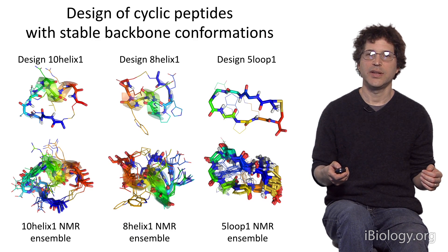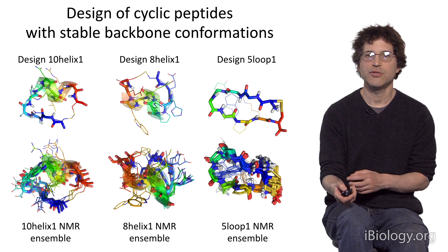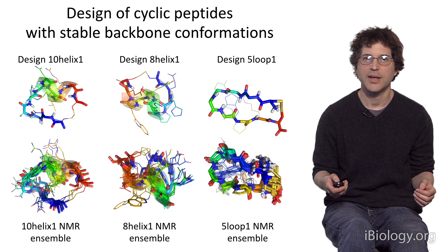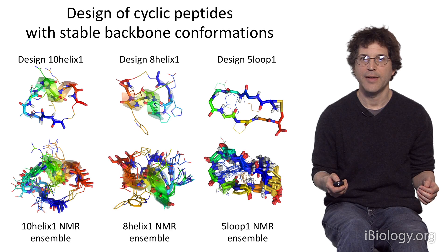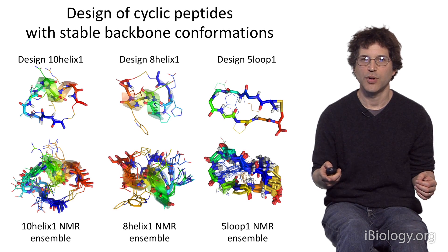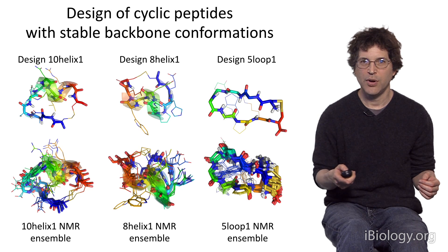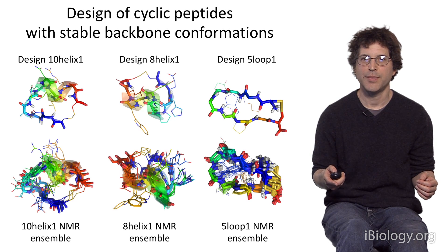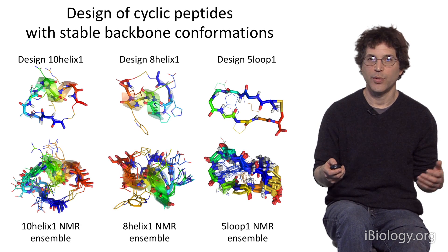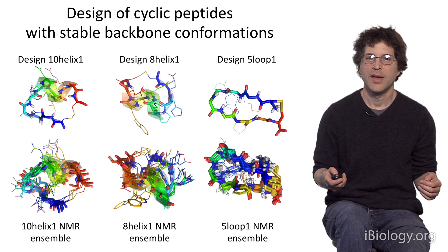The final class of proteins — small disulfide-bonded proteins — are very interesting because they could form the basis of new types of therapeutics, as they're very small and easy to make. This shows work by Vikram Mulligan, a post-doc in the lab, where he's designed very short peptides that are predicted to fold up to unique structures. There are three examples in the top row of designs he made, and below that are NMR structures of these peptides when actually made in the lab. Again, these peptides come out with very similar structures to the design models.